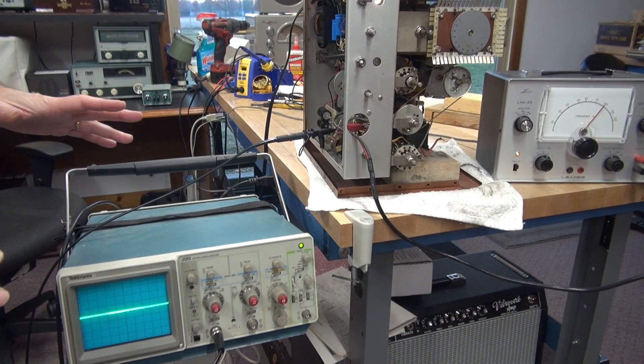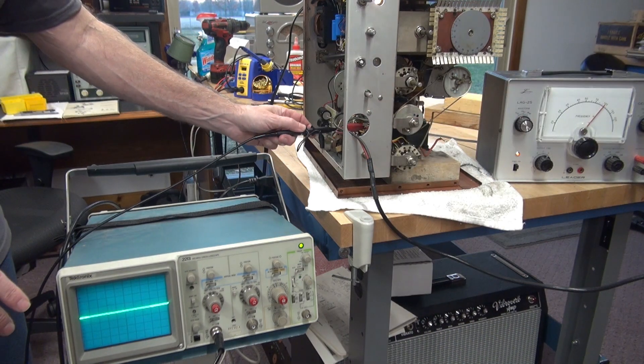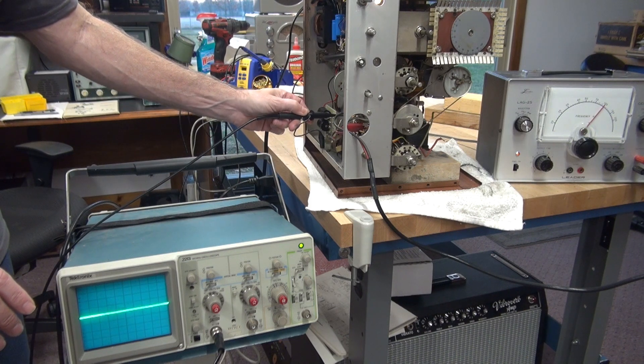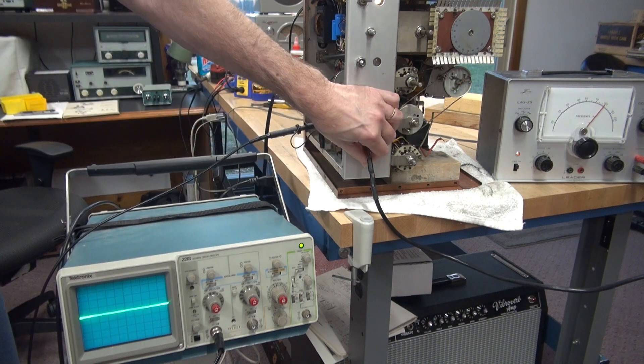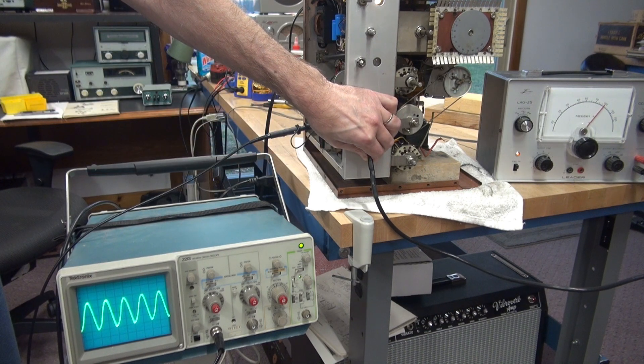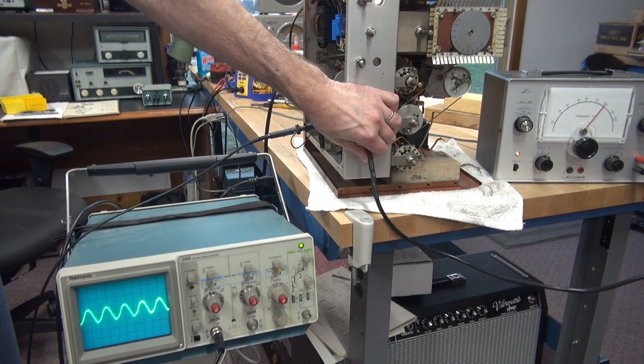We can test the other side of the audio driver transformer by simply taking a probe and moving to the second 807 100-ohm resistor, bring up our audio, and you can see the signal is present on both sides.